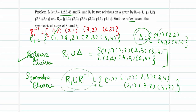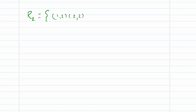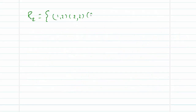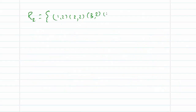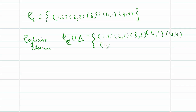Now let us try R2 = { (1,2), (2,2), (3,2), (4,1), (4,4) }. The reflexive closure is R2 ∪ delta. From R2 we have (1,2), (2,2), (3,2), (4,1), (4,4). Adding delta: (1,1) is introduced; (2,2) is already there; (3,3) is introduced; (4,4) is already there. This set now includes all reflexive elements and is called the reflexive closure of R2.